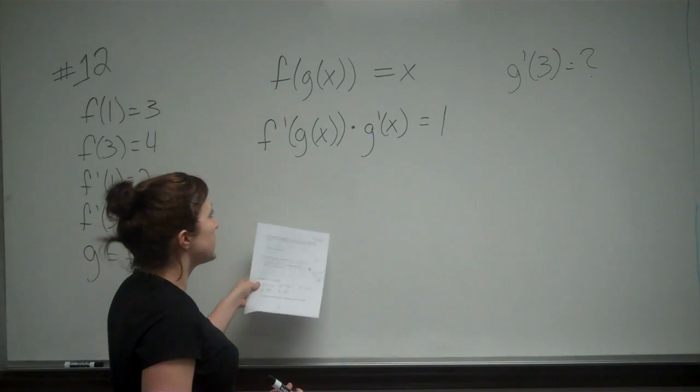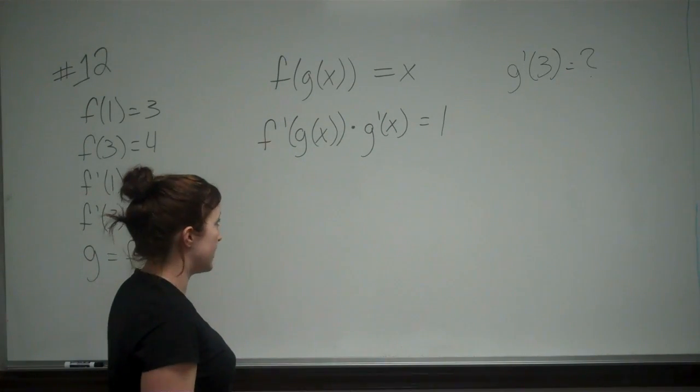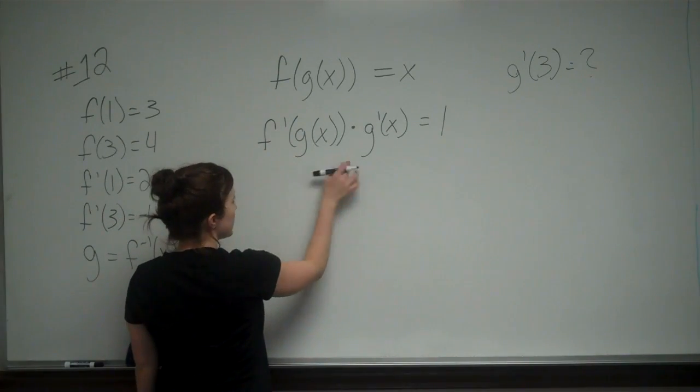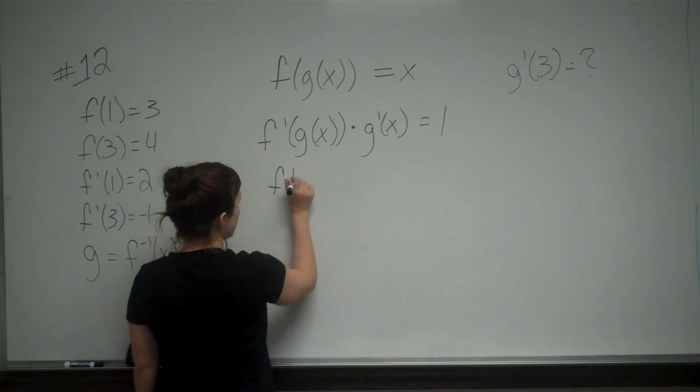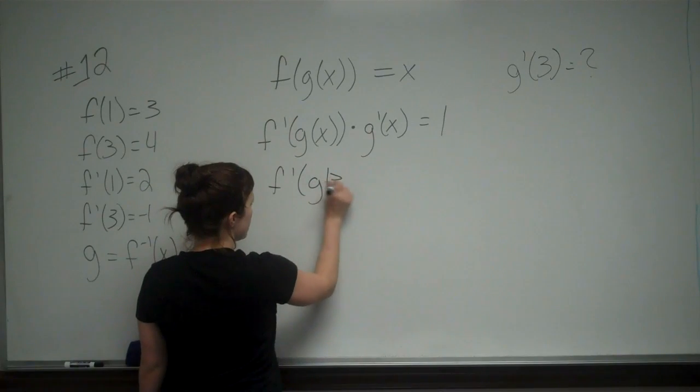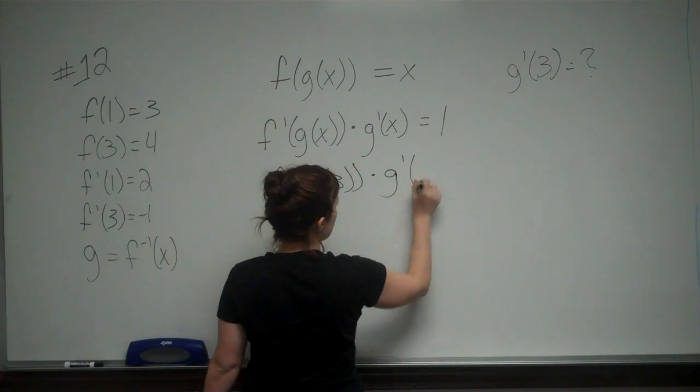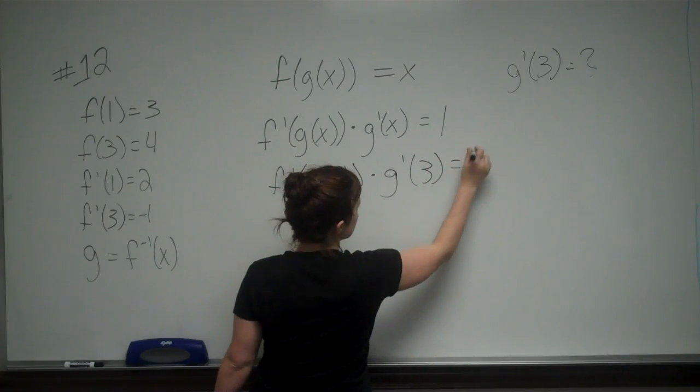So now that we know this, we're looking for g prime of 3, so our x value is 3. So when we plug that in, we get f prime of g of 3 times g prime of 3 is equal to 1.